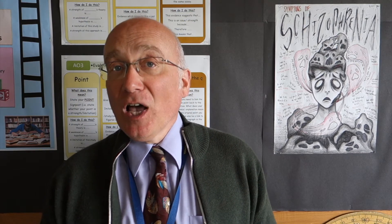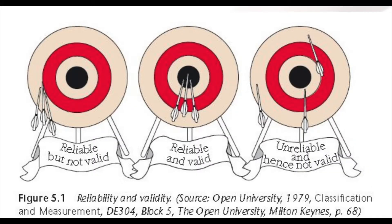Validity is the question of whether an observed effect is genuine or not. To understand validity, we need to understand reliability, because a test or a measure can only be valid if it is reliable. So have a look at the bullseye in the middle — this is reliable and valid, getting the same correct answer every time, and obviously this is the most desirable case.